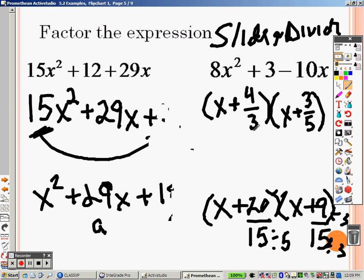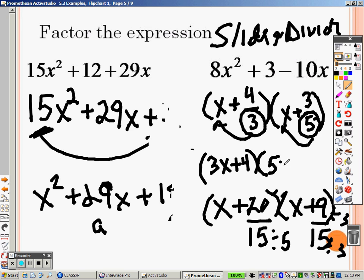Now, we can't keep our factors like this, so I move this 3 up right beside it, so I end up with 3x plus 4 as a factor. And I move this 5 up and over as well, because we can't have fractions in factors, so we have 5x plus 3, and those are my two factors for that problem. So when we come back here, we will try slide and divide again.